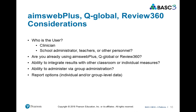Some of the questions you ask in order to choose which platform to use: Who is the user — a clinician, school administrator, teacher, or other personnel? Are you already using one of these platforms? It's often easier to stick with a platform you currently use. Also consider the ability to integrate results with other classroom or individual measures, the ability to administer via group administration, and your reporting options. If you want reports aggregated by student group, grade, or classroom, you would more likely want to use AIMSweb or Review360 versus Q-Global, which focuses more on providing individualized reports.